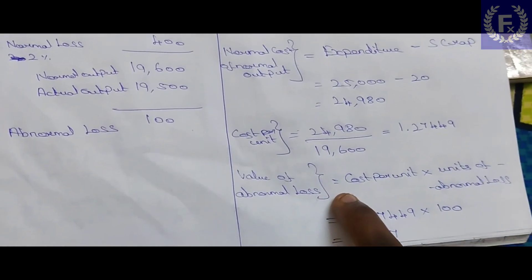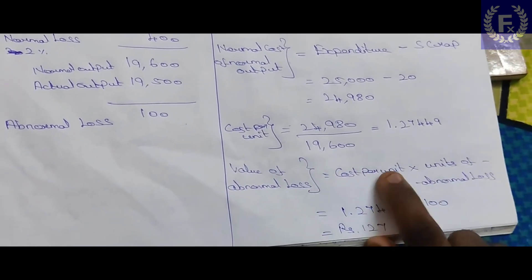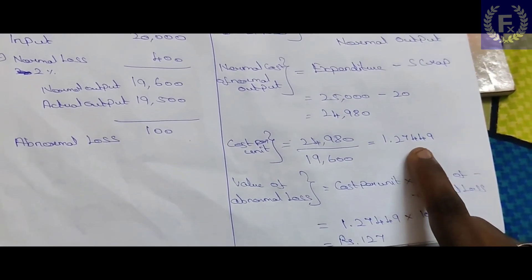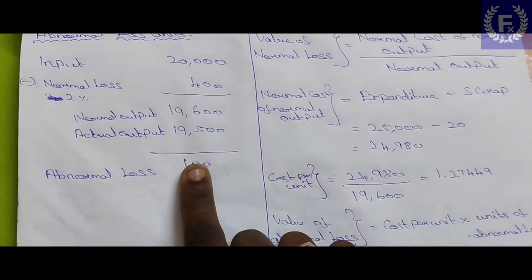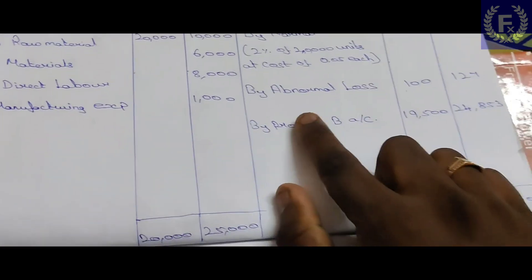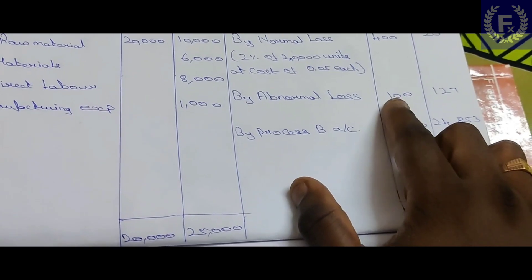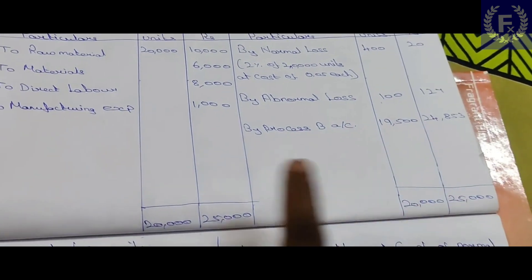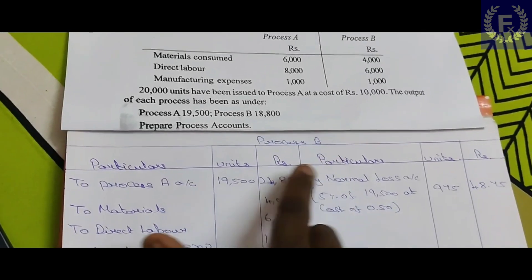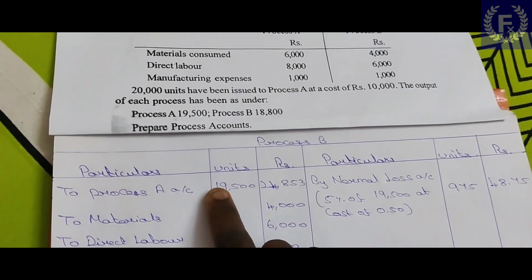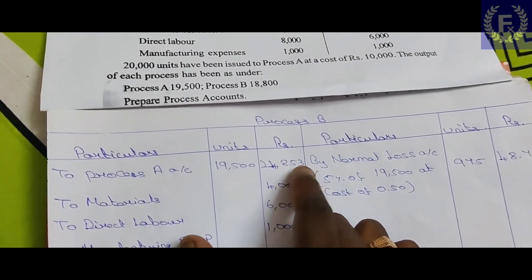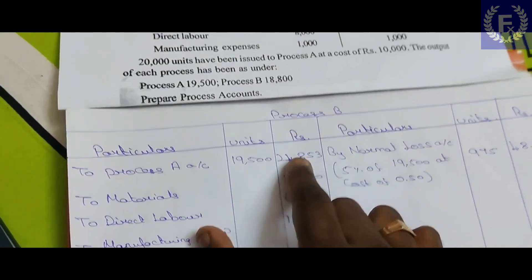Value of abnormal loss: the formula is cost per unit multiplied by units of abnormal loss. Cost per unit is 1.27449 and abnormal loss units are 100. So, value of abnormal loss = 1.27449 × 100 = 127 (approximately). The balance of Process A transfers approximately 19,500 units at an amount of 24,853 to Process B.